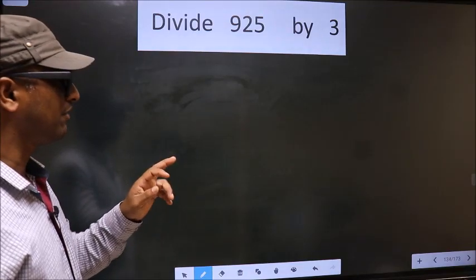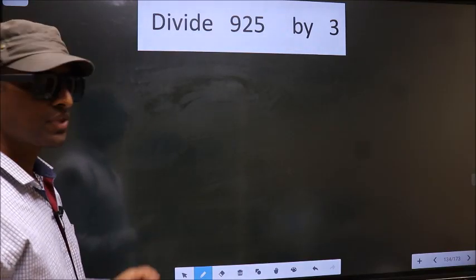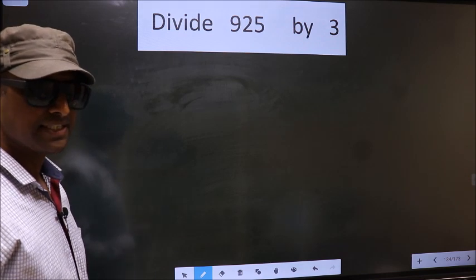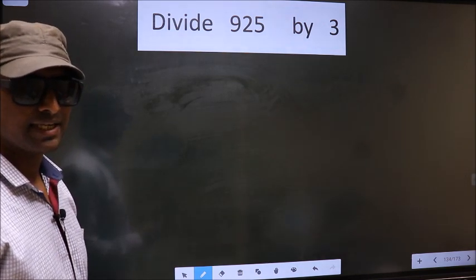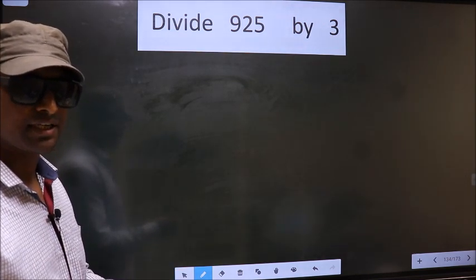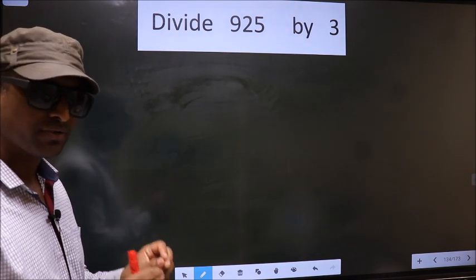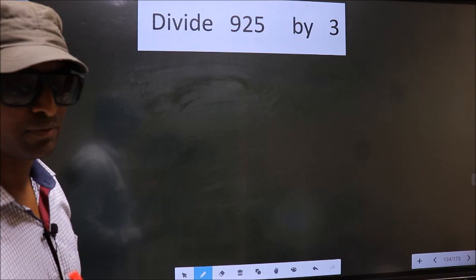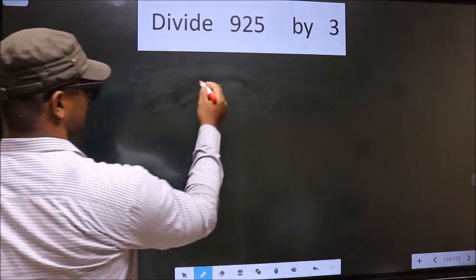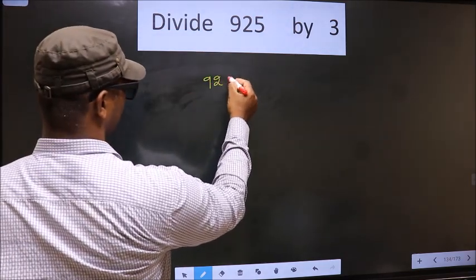Divide 925 by 3. While doing this division, many do this mistake. What is the mistake that they do? I will let you know, but before that we should frame it in this way: 925 divided by 3.